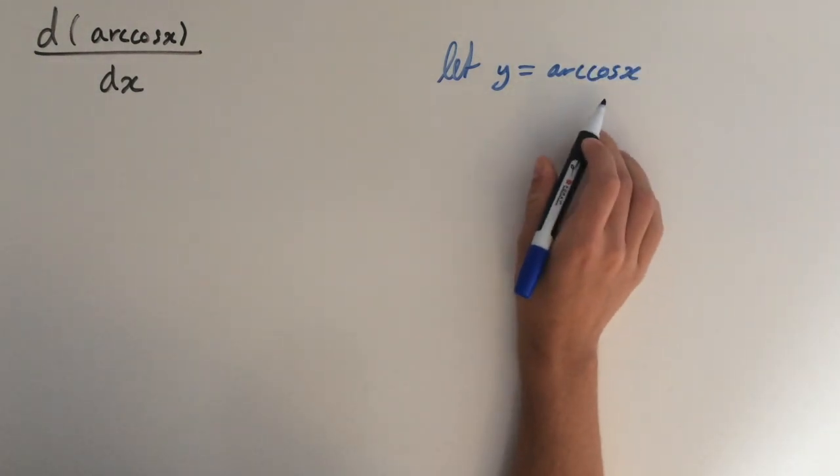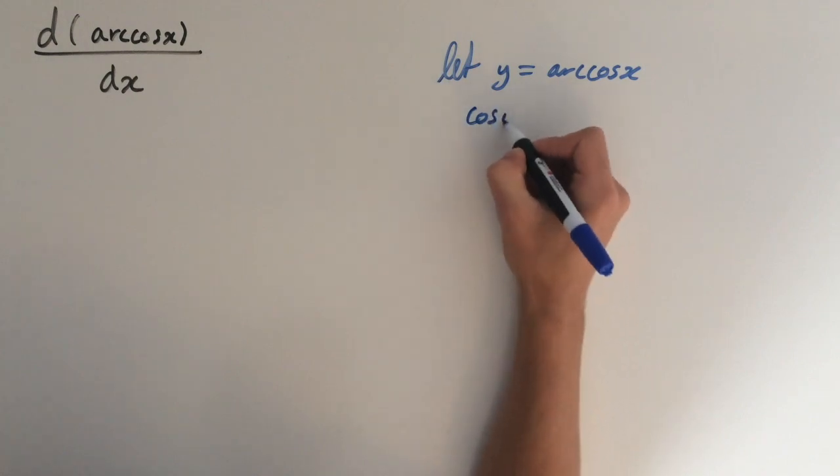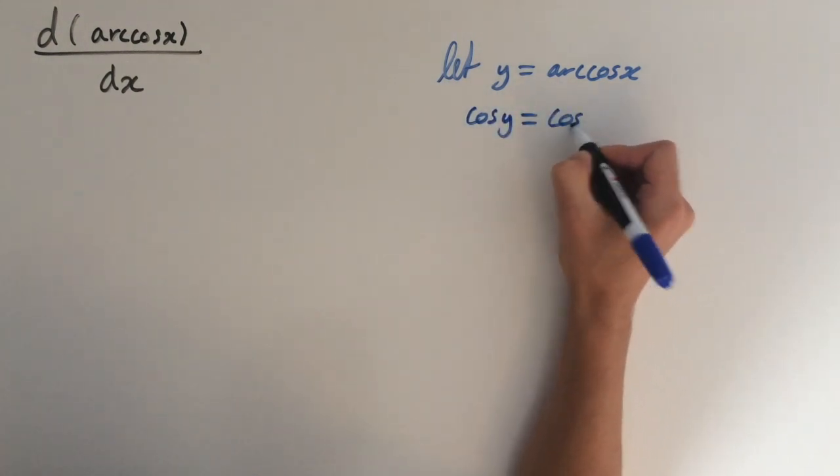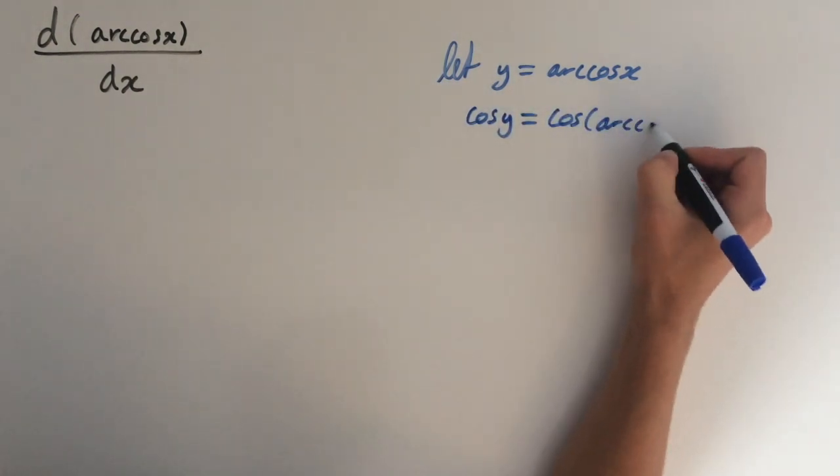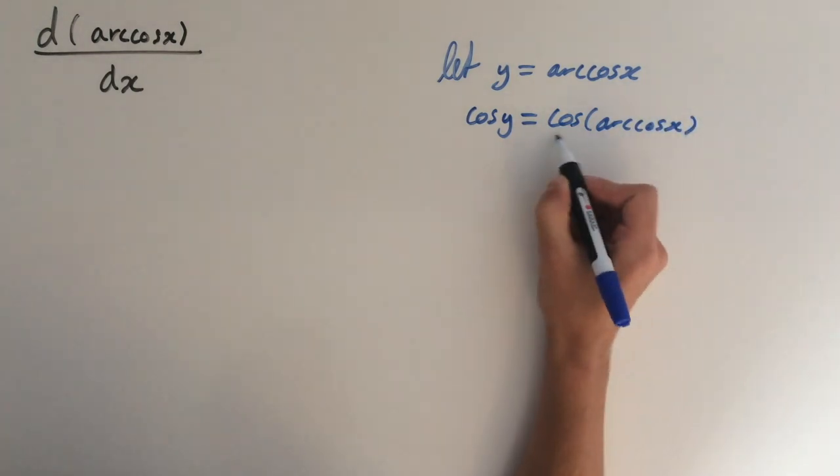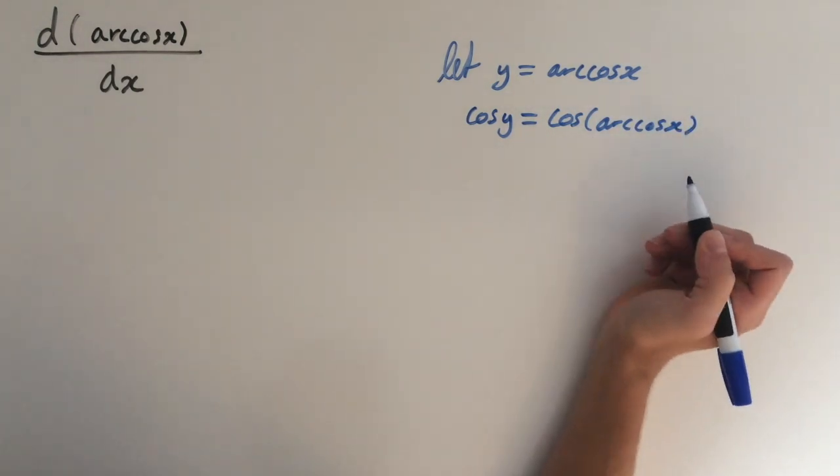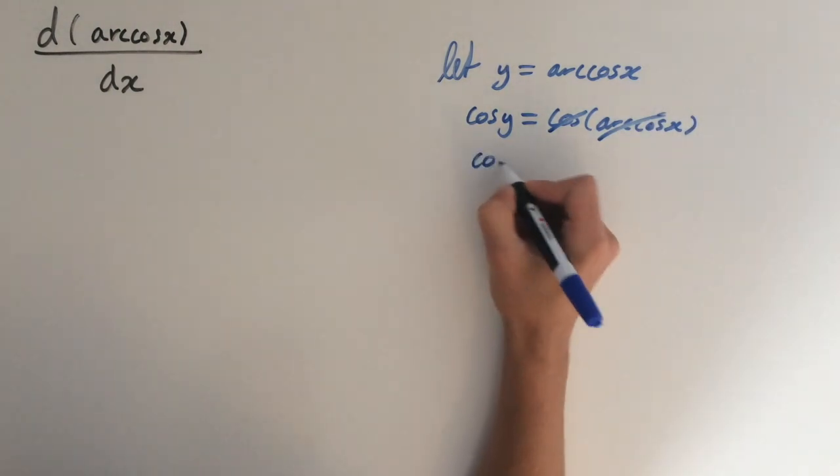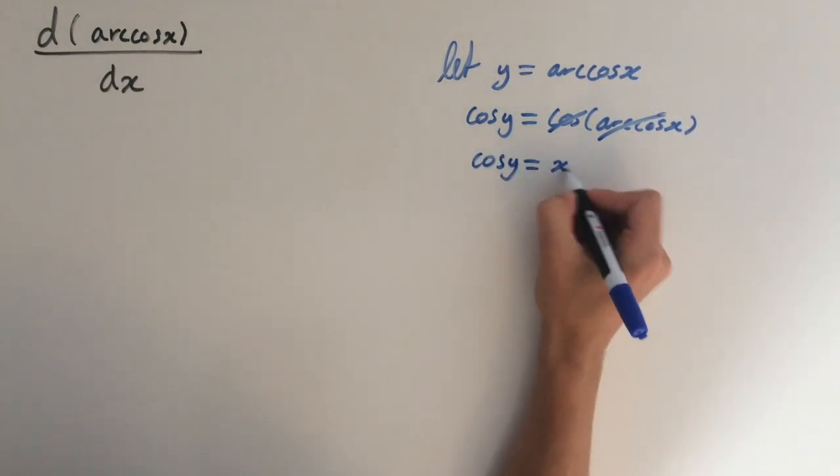And now we apply the function of cos to both sides. So this gives us cos of y equals cos of arccos of x. And cos and arccos are inverse functions, so they're going to cancel out. So we're going to be left with cos of y equals x.